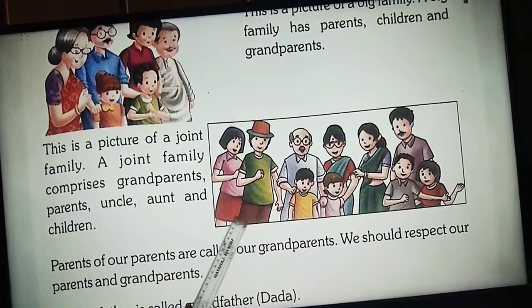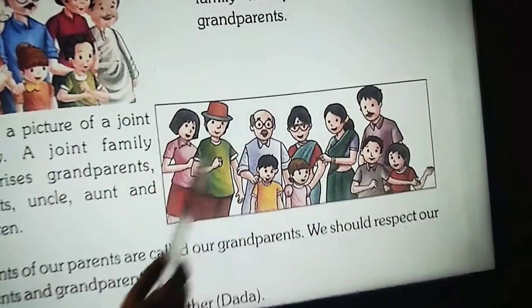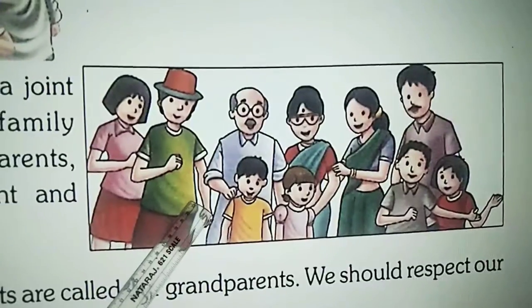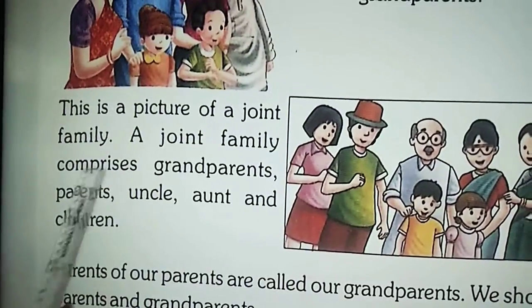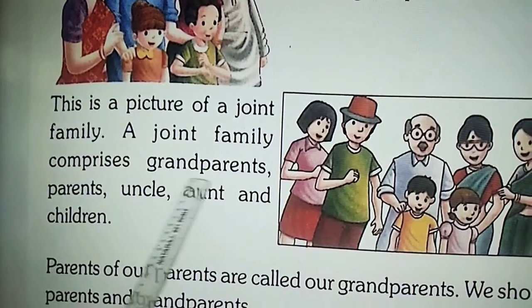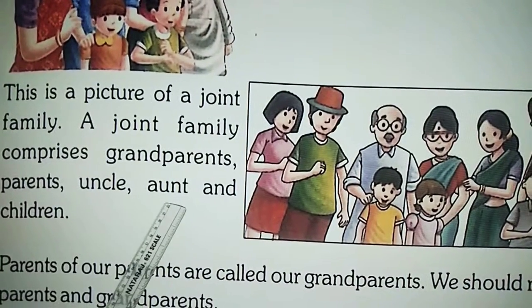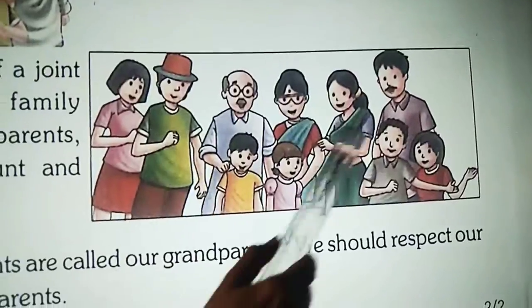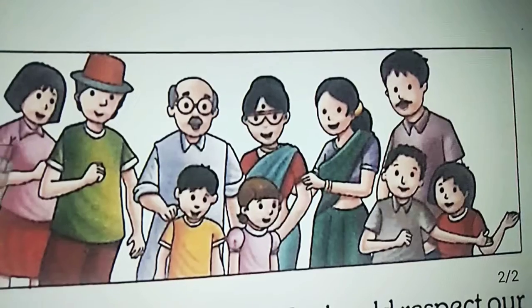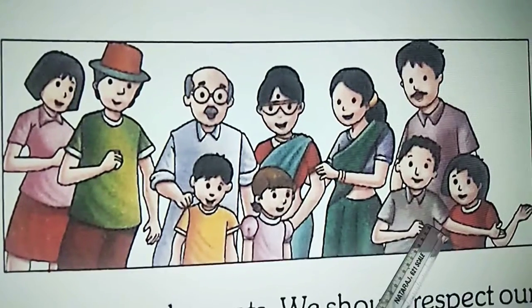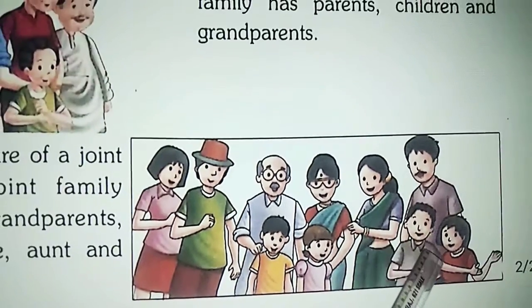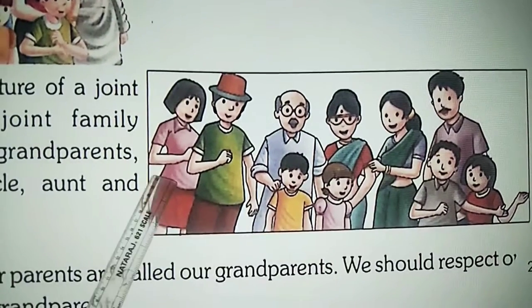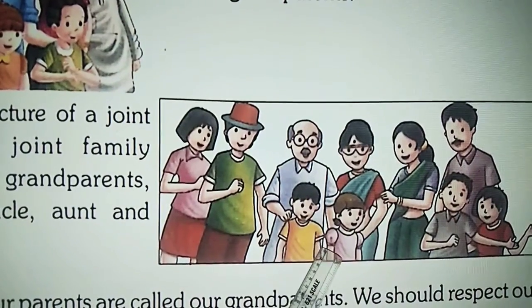Now look at this picture. There are many members. This is a picture of a joint family. Our joint family comprises grandparents, parents, uncle, aunt and children. Those children of our uncle and aunt are called cousins.